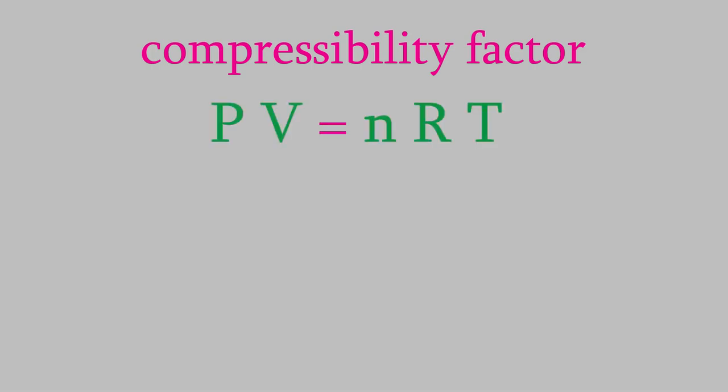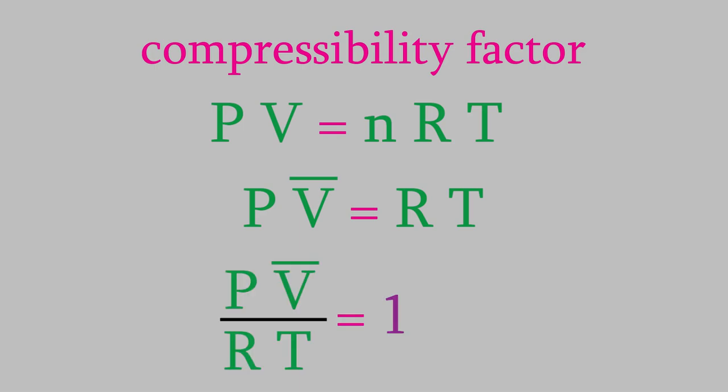We start with the ideal gas law, using the intensive variable v bar, the molar volume of the gas. If you've forgotten what an intensive variable is, you might want to review the previous video. Now, we'll just divide both sides by R times T, so we get PV bar over RT equals 1. This fraction is called the compressibility factor, and we give it the symbol z.